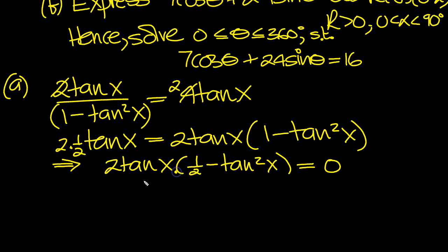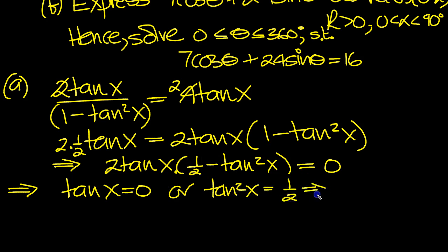So here we can see that that implies then that either this is 0, the product is 0, so either this is 0, which gives tan x equals 0, or this is 0, and that tells us that tan squared x is equal to a half, and that implies that tan x is equal to, square root both sides, plus or minus 1 over root 2.